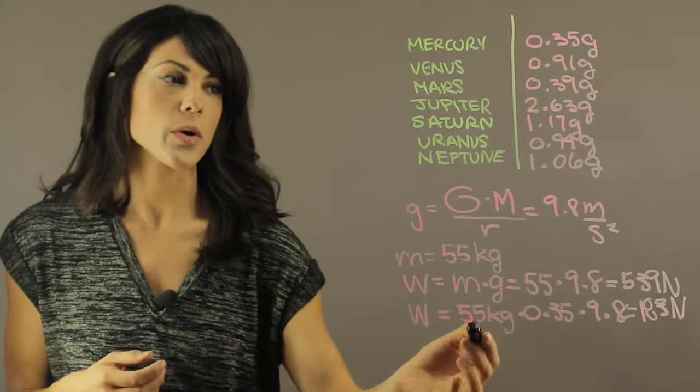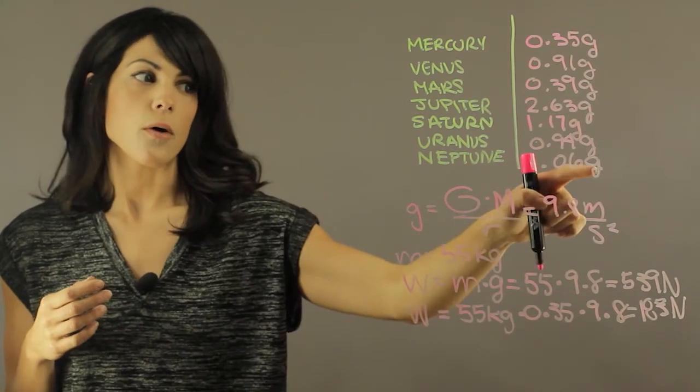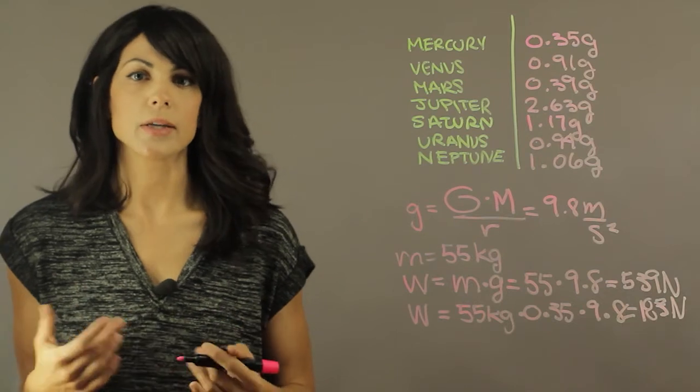You can just plug into your equation the gravitational proportion with g, and you can tell how much you would weigh on each planet.